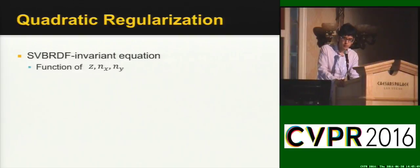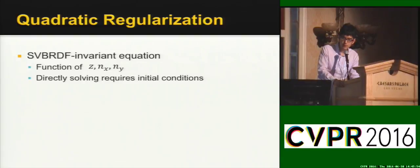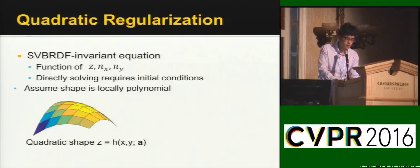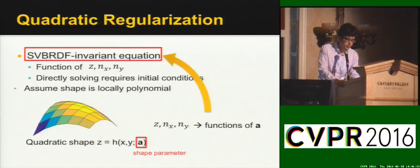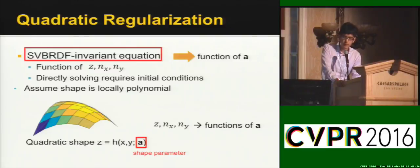So given this equation, we can then try to solve for our shape. Unfortunately, directly solving it will require initial conditions, so it's again not feasible. To deal with this, we assume that the shape is locally a polynomial. Specifically, for each 5x5 patch, we assume that the depth z is a quadratic polynomial of the spatial coordinates. And a here is the shape parameter. By doing this, the depth and the normals will all become functions of a. And if we plug this into the original equation, the equation will also become a function of a. So we can just solve this using some standard optimization tool.